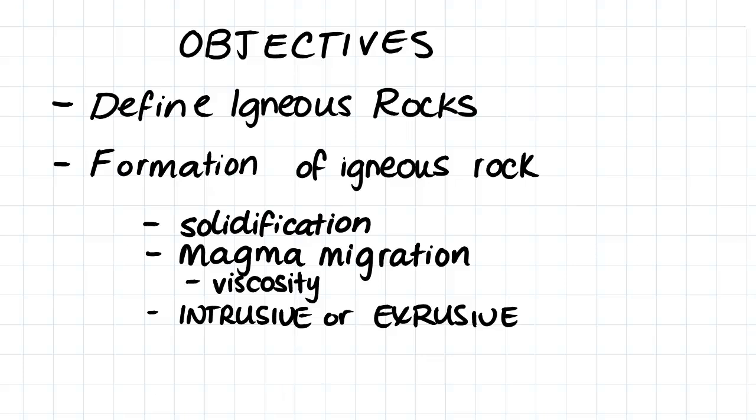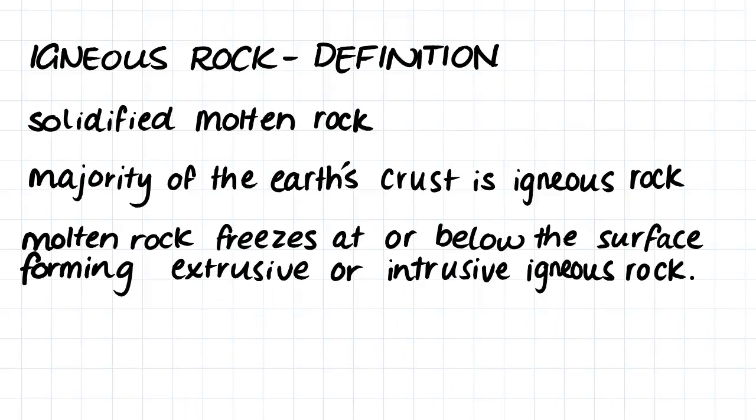Igneous rock forms from the solidification of molten rock, and the majority of the earth's crust is actually made up of igneous rock. This molten rock freezes at or below the earth's surface. When it freezes at the earth's surface as lava, we form extrusive igneous rock. But when it freezes below the earth's surface as magma, we end up with intrusive igneous rock.